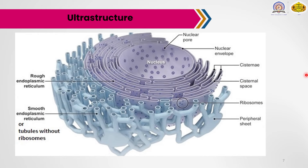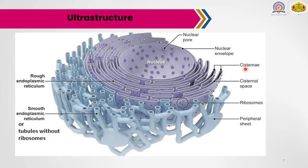Moving to the next point — the ultrastructure of endoplasmic reticulum. The ultrastructure forms a complex structure, meaning this organelle is composed of numerous components and is associated with other organelles such as the nucleus. This complex structure is mainly composed of three important components: cisternae, vesicles, and tubules.